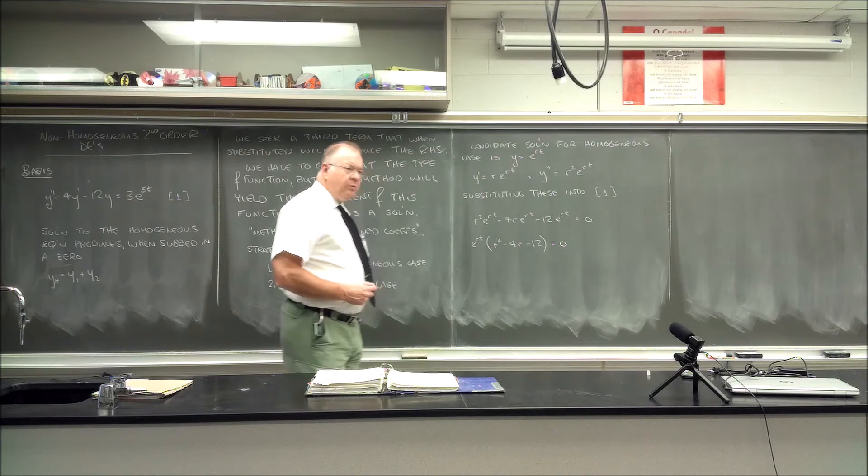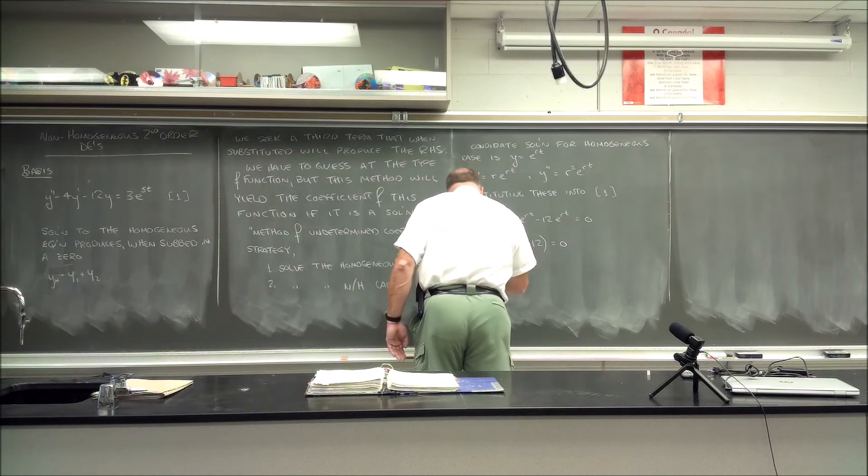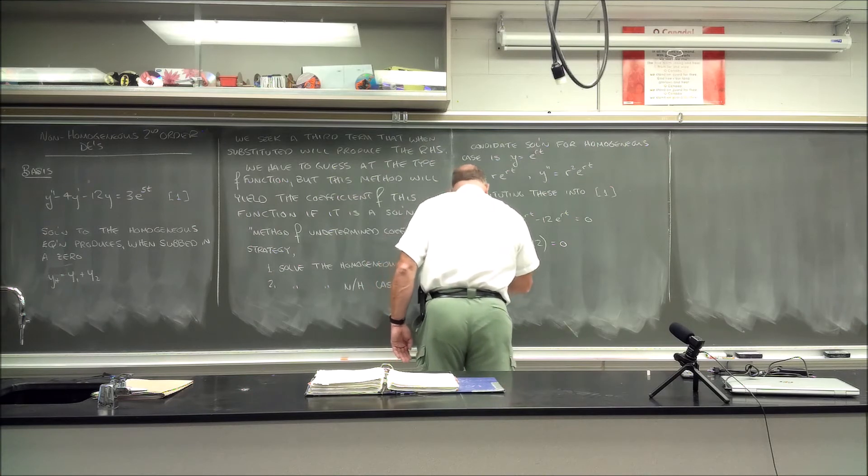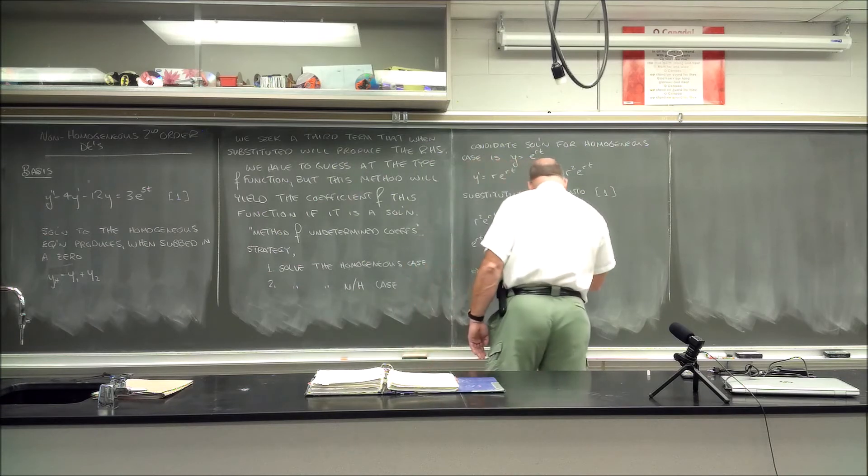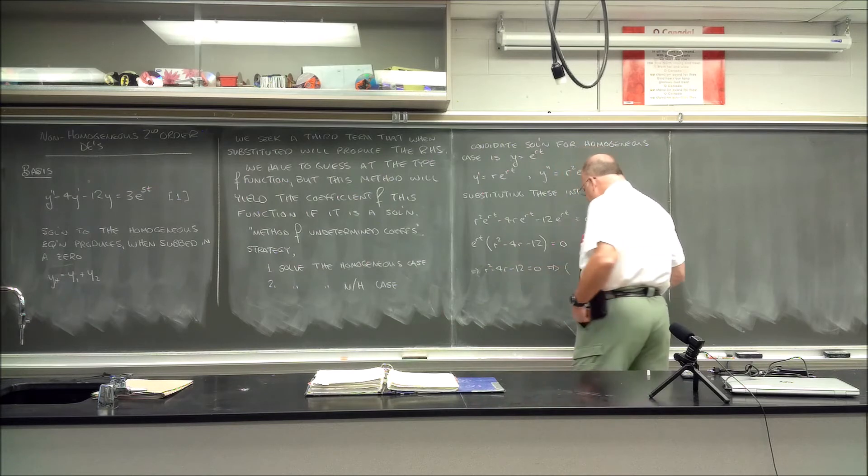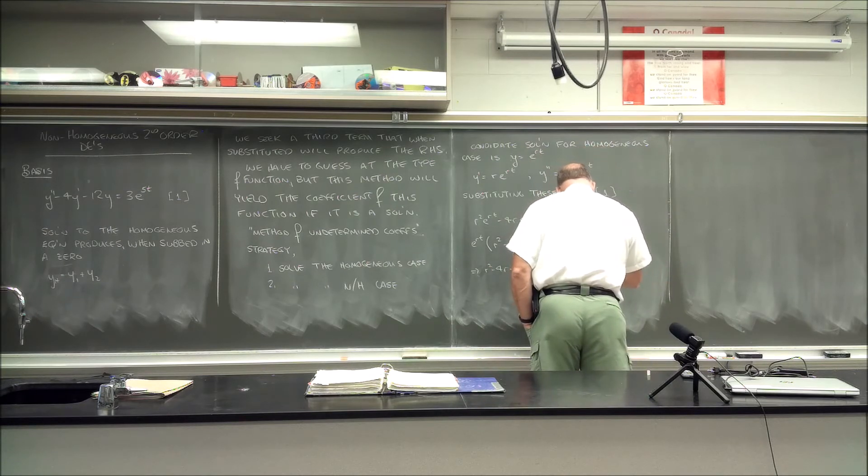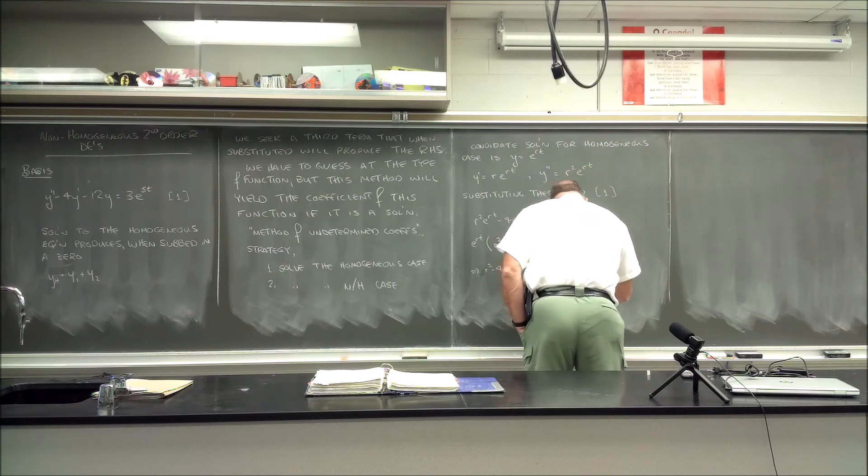And so this can be factored fairly easily. This implies of course that r² - 4r - 12 equals 0 and furthermore that because it's a negative r that it will be (r - 6) and (r + 2), so we'll say r_1 equals 6 and r_2 equals -2.